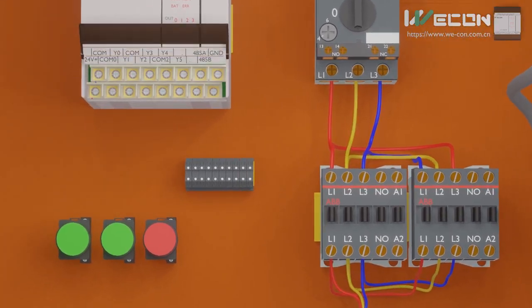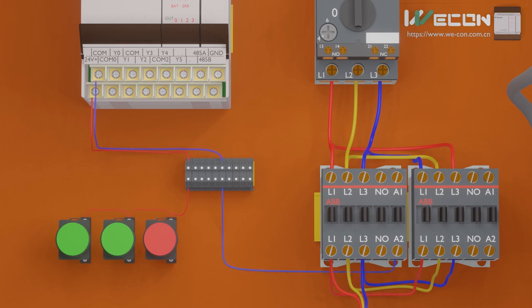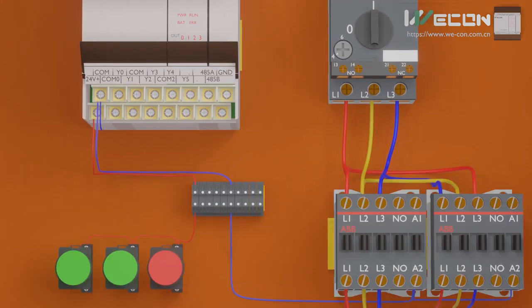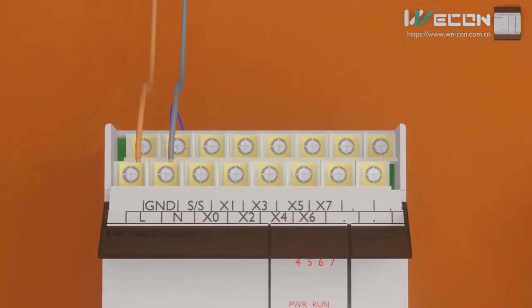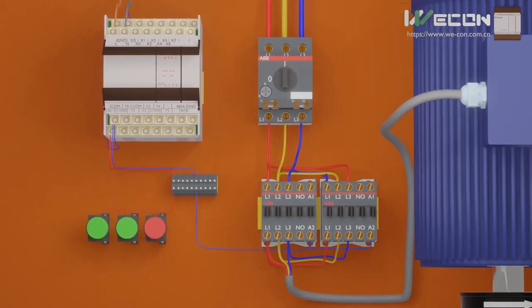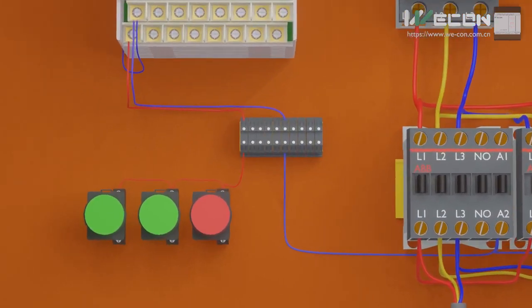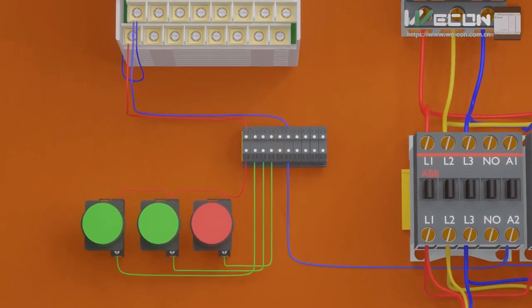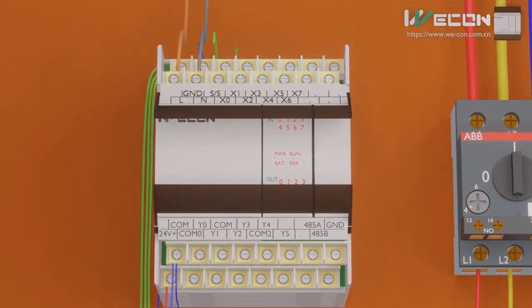This Wecon PLC has an internal 24V DC power supply which we can use to power a few of the input and output devices. First, we connect a red wire from the positive terminal of the power supply to one end of all the pushbuttons. Next, we connect a blue wire from the common terminal of the power supply to the A2 terminals of both contactors, and another blue wire from the common terminal to the SS terminal of the PLC. Then we connect wires from the other end of the pushbuttons to PLC input terminals X0, X1, and X2.